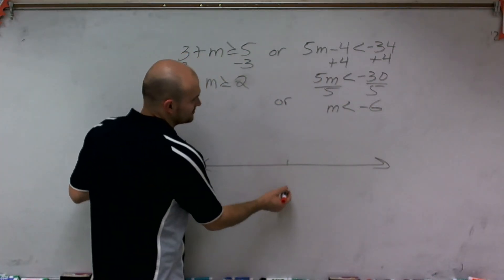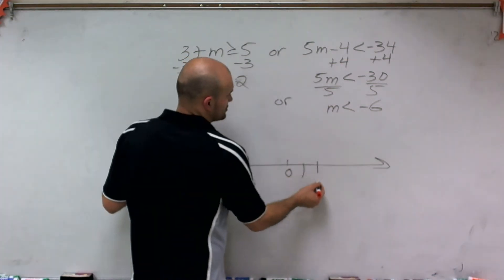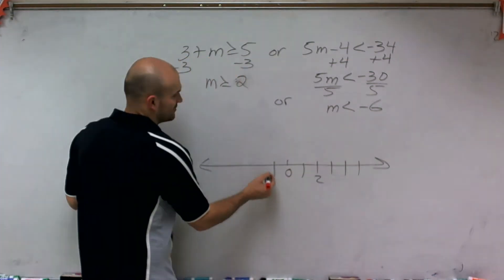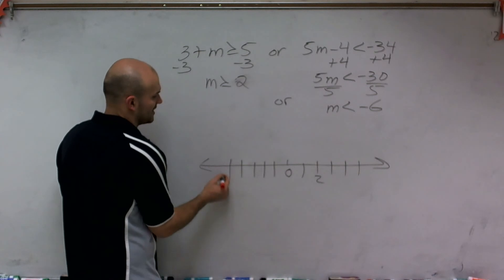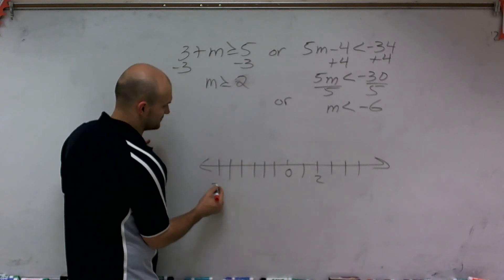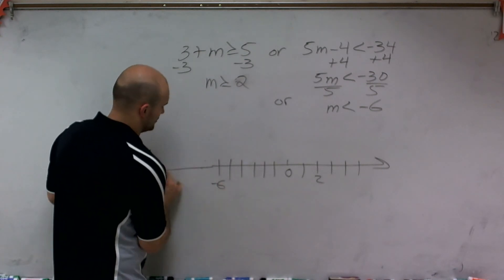So let's do 0 here. So I have 1, 2, 3, 4, 5. And then negative 1, 2, 3, 4, 5, 6. Of course, it's negative. Let's get a little bit farther.